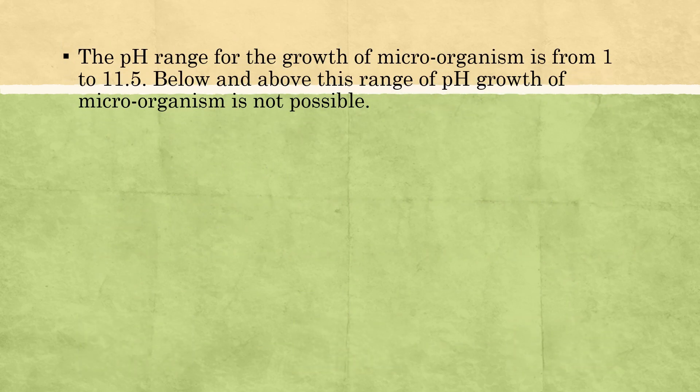In general, the pH range for the growth of microorganisms is from 1 to 11.5. This is the growth range of pH, and within this range all microorganisms can grow. Below and above this range, growth of microorganisms is not possible — so below pH 1 and above pH 11.5, there is no growth of microorganisms.